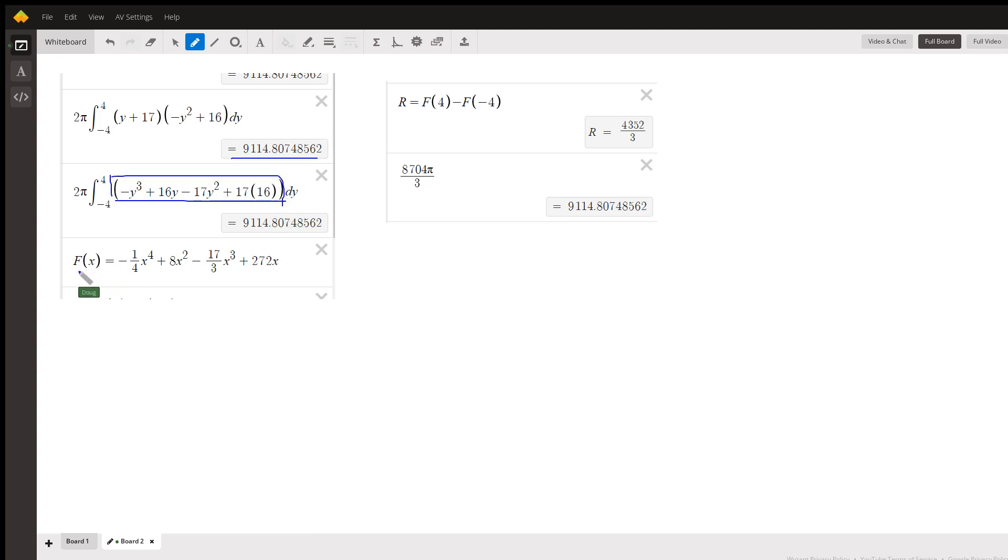And if I evaluate that from negative 4 to 4, leaving it as a fraction, 4,352 thirds. And if I multiply that by 2 pi, that matches our decimal approximation. So there's your exact answer right there.